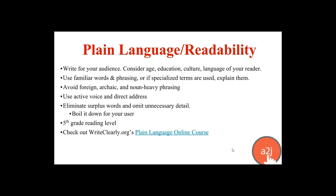The final thing to talk about is plain language and readability. You as the author are the subject matter expert on your end user. Make sure to write for your audience — consider their age, education, culture, and language. Make sure to use familiar words and phrasing. If you have to use specialized terms, make sure you explain them. A to J Author has a lot of just-in-time learning features that allow you to explain things to your end users at the point they need to know it — so if you have to use specialized terms, define them with a pop-up.